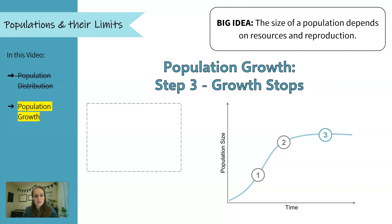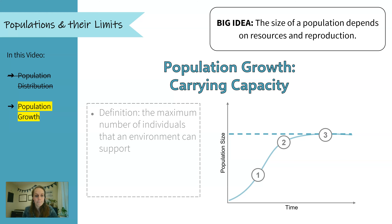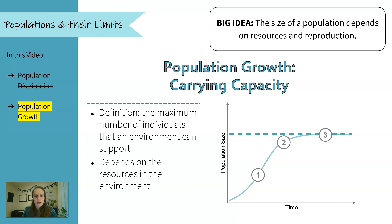Finally, growth stops. We reach a maximum number of organisms and the size of the population levels out, staying the same over the next several generations. This maximum capacity — the maximum number of a population that an area can support — is what we call the carrying capacity. Carrying capacity is the maximum number of individuals that an environment can support, and it's dependent on the resources in the environment.